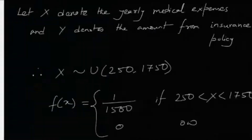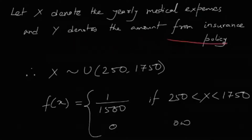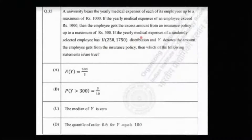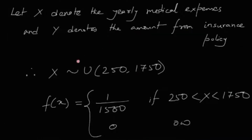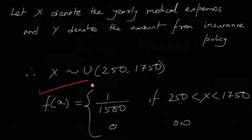Let X denote the yearly medical expenses of that randomly selected employee — that is a random variable — and let Y denote the amount from the insurance policy. It is clearly stated that the yearly medical expenses follow a uniform distribution, therefore X follows Uniform(250, 1750), and the probability density function of X is 1/1500 over that interval.